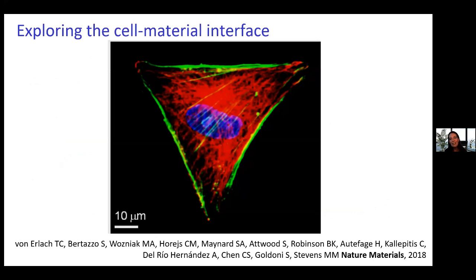I'm going to show you a quite fundamental study before moving into applied examples. Previous work by Chris Chen and Don Ingber had shown that if you had stem cells arranged in different shapes, it could actually influence their differentiation into different lineages. For example, a round stem cell on a surface would become more fat-like and a triangular one more bone-like, even though they have the same contact area. That was really fascinating, and the full story wasn't yet uncovered.